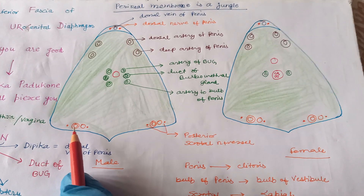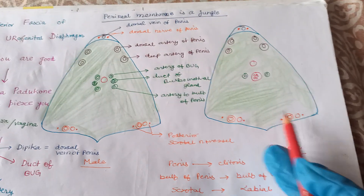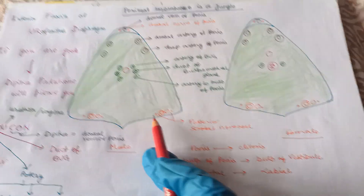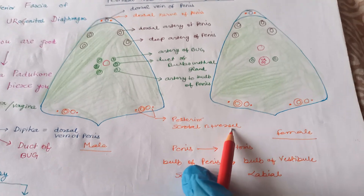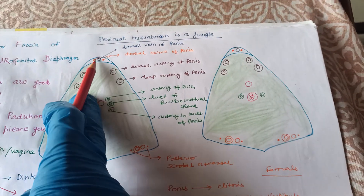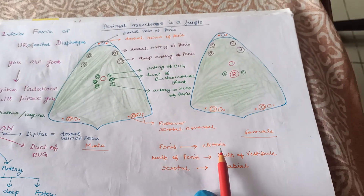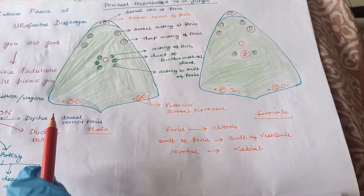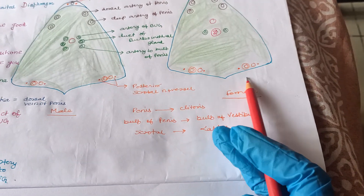Look — husband, wife, and two children. A nuclear family, a happy family. They are posteriorly placed. What do we see at the end? A happy ending! So, posterior scrotal nerve and vessel. The difference in male and female: penis becomes clitoris. Dorsal vein of penis becomes dorsal vein of clitoris. Bulb of penis becomes bulb of vestibule. And posterior scrotal nerve and vessel in male becomes posterior labial nerve and vessels in female.